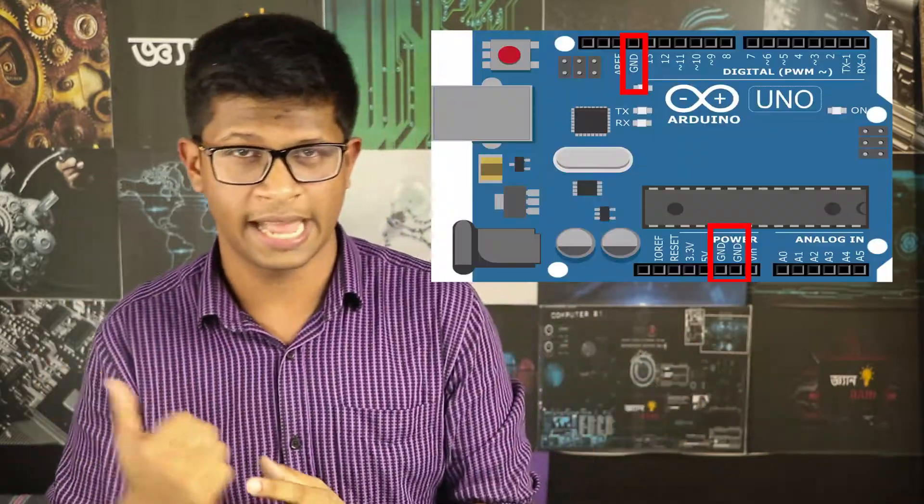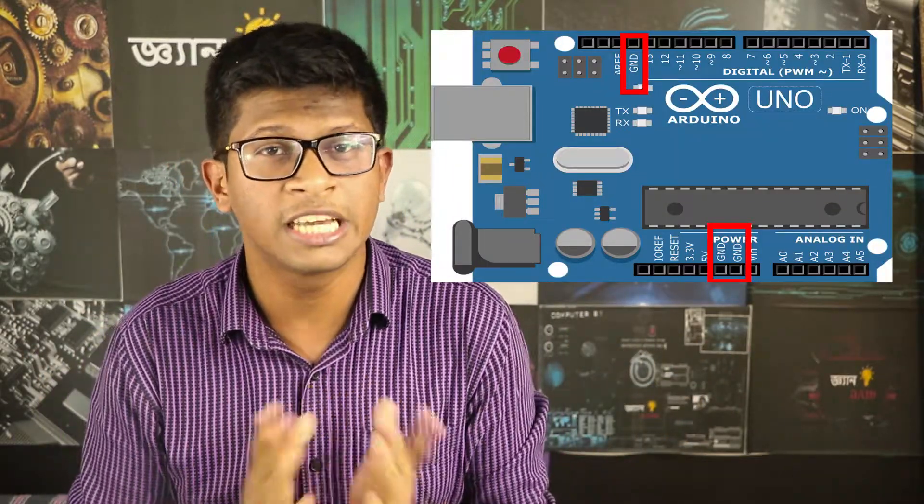We use these pins to supply power. VIN and ground provide voltage input. The 3.3V pin provides regulated power, and the maximum current limit is around 50mA, but usually we need to be careful with power consumption.